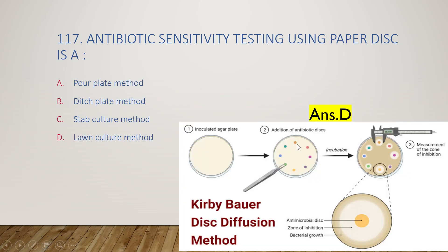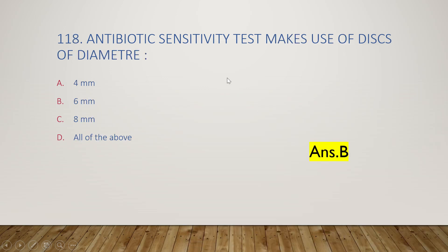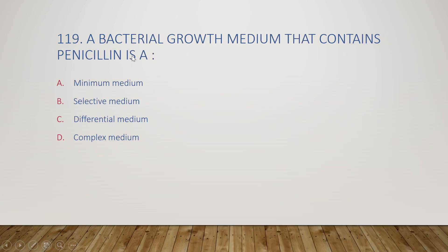Next question: a bacterial growth medium that contains penicillin is a minimum media, selective medium, differential medium, or complex medium? The right answer is option B, selective medium.